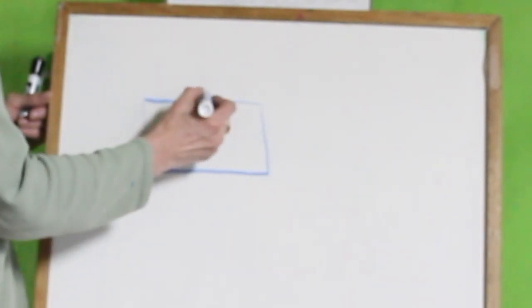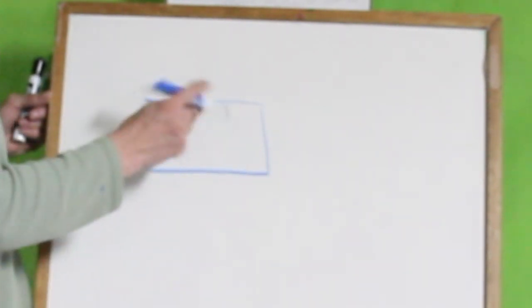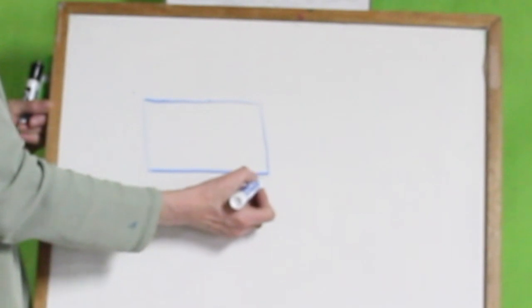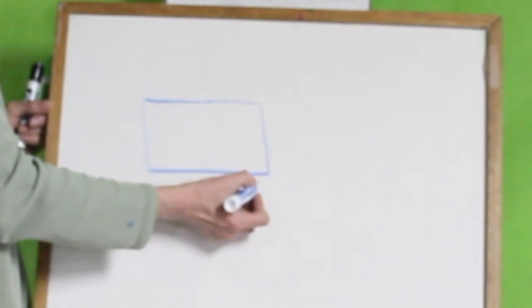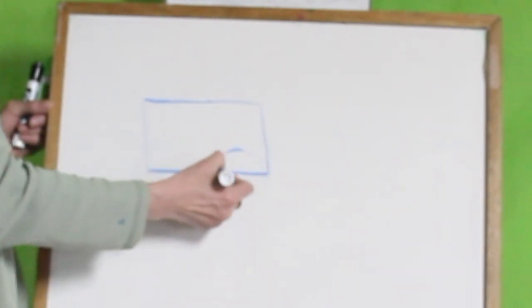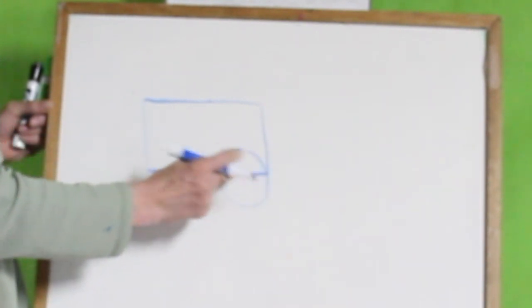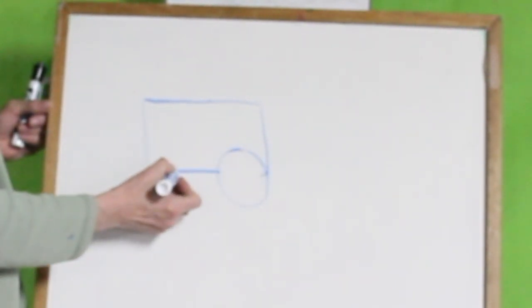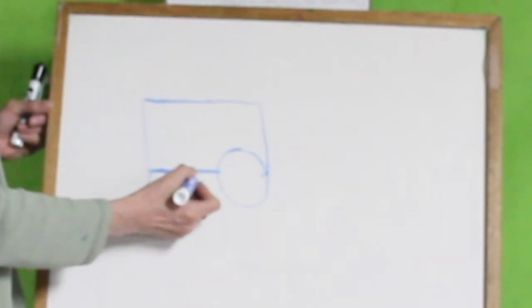Now we're going to draw, this is going to be the engine, and then we're going to put one car behind it. Now, trains have wheels. I'm going to draw one big wheel right here, erase my overlapping line, and one littler wheel right here, and one wheel in between.